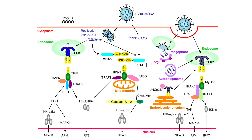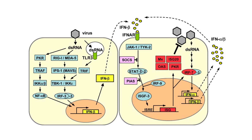Once MDA5 and RIG-I detect replication products, they interact with mitochondrial proteins FADD and TRAF3, producing caspases which result in formation of NF-κB and type 1 interferon. This type 1 interferon enters the circulation and reaches other cells where, through the JAK-STAT pathway, it produces proteins that interact with the nucleus to reduce viral replication product formation and lower the viral load.